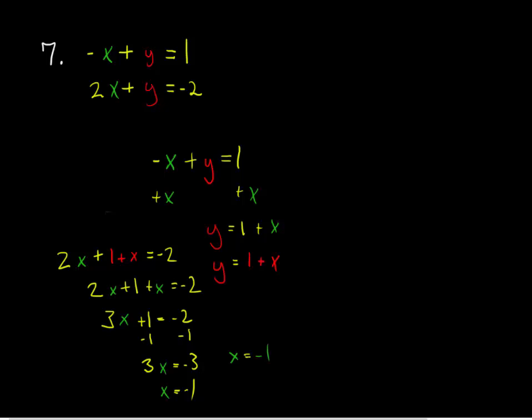And since x is equal to negative 1, we can use negative 1 as a substitution into either equation to find the value of y. So instead of writing y equals 1 plus x, we write y equals 1 plus negative 1, to show that y is equal to 0. So the solution to our system is negative 1 for x, and 0 for y.